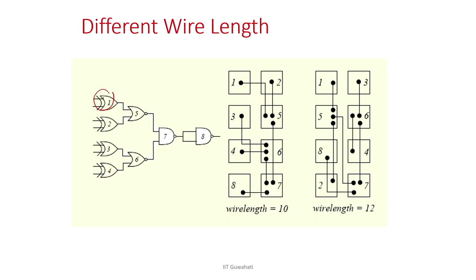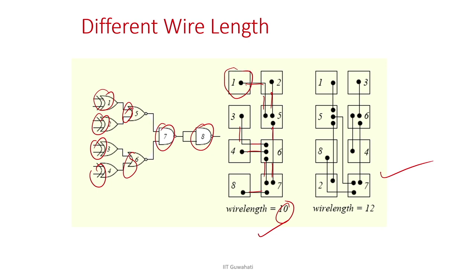For example, placing all gates in a particular area in one arrangement gives a total wire length of 10. With a different placement order — say 1, 3, 5, 6, 8, 4, 2, 7 — the wire length becomes 12. Same circuit, same number of partition blocks, same area, but different placement increases the wire length. The placement problem tries to minimize the overall wire length needed to make connections between blocks.